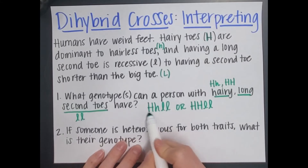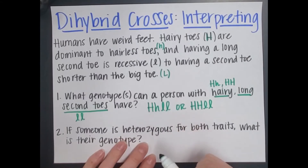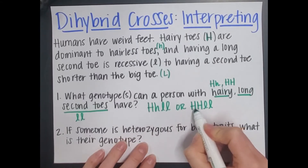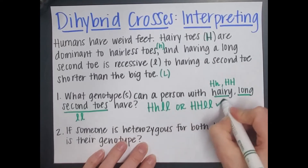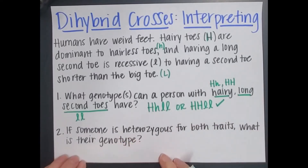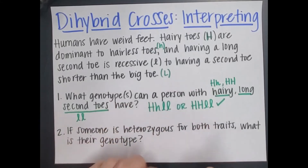Let's check it. Big H, little h — that means hairy. Absolutely. Little l, little l — long second toes. Yes, because it's recessive. Big H, big H — still hairy toes because they're dominant. Little l, little l — long second toes. Both check out; those are the only possible genotypes. Any other combination would give either hairless toes or shorter second toes, so it wouldn't work any other way.